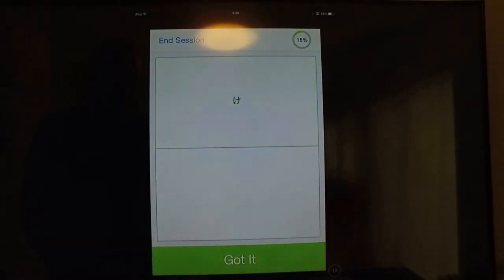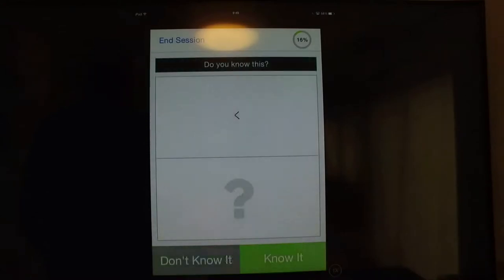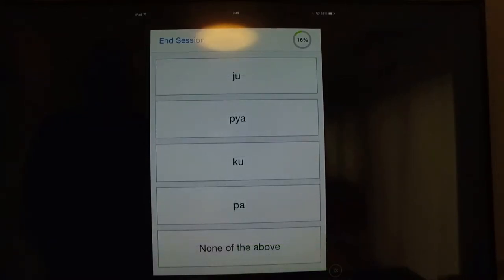Ka, got it. What's this one? This is 'ke', ke, ke. Do you know it? What's this one here? Which one is it? Ju, kya, ku, or pa? It's ku.